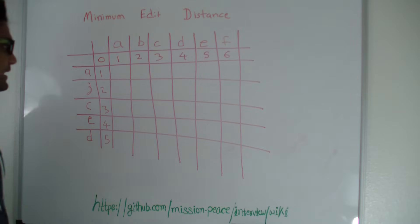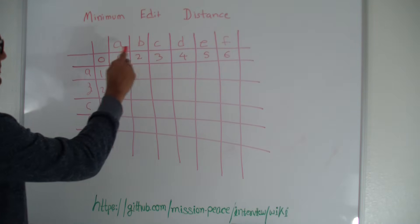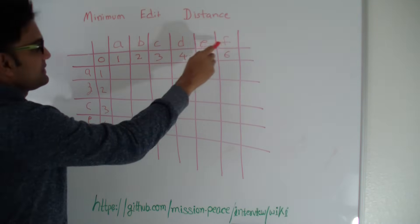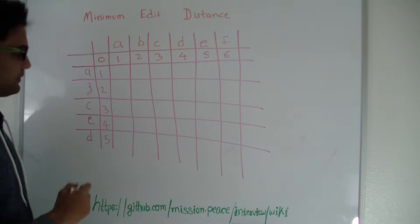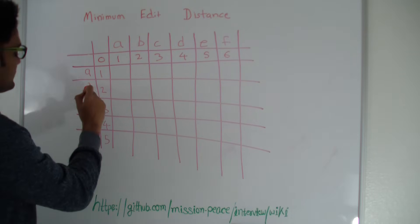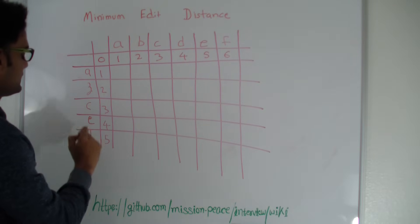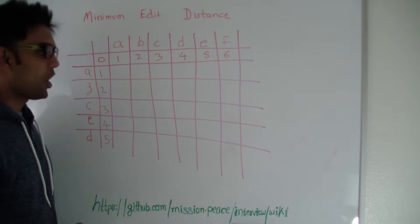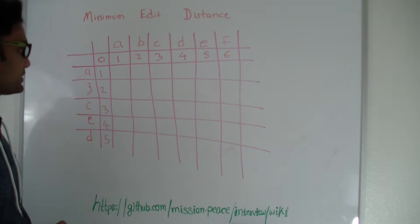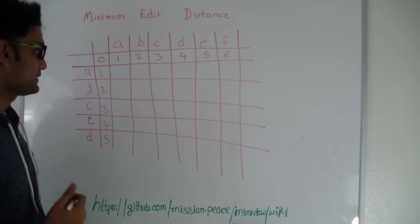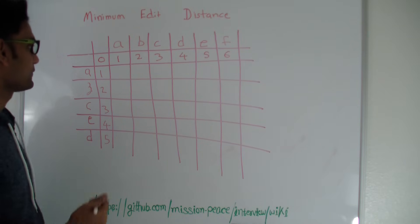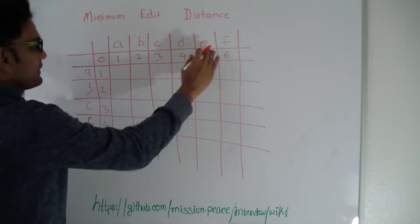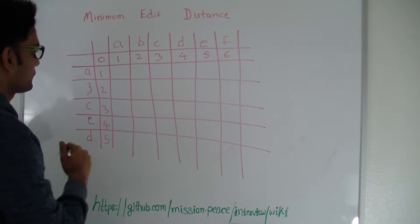Let's look at an example. I have the first string ABCDEF and another string AZCED. How many minimum operations — which is edit, delete, or add — would it take to convert this string into this string?